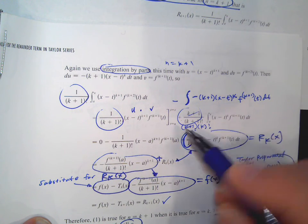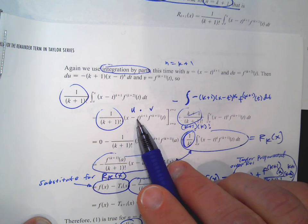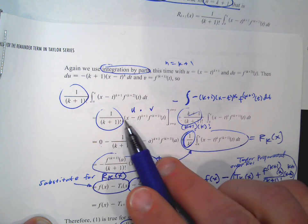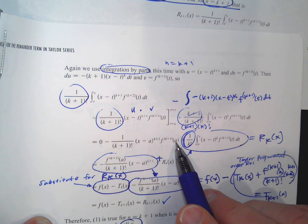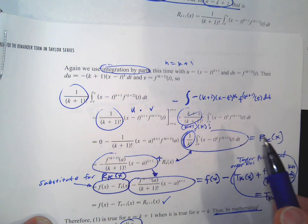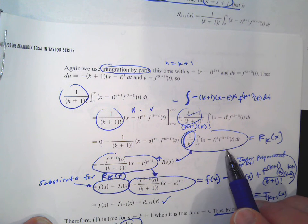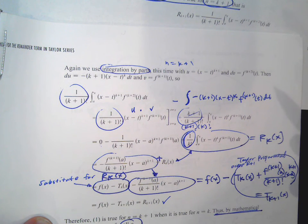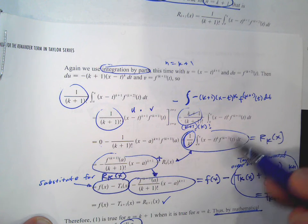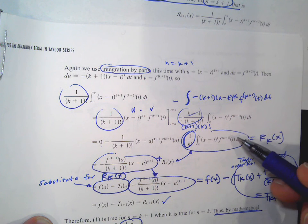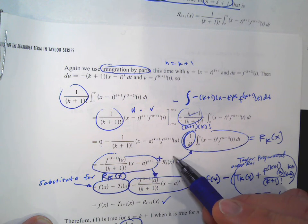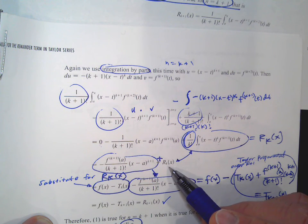This right here represents the remainder for the kth term — it's the formula for the remainder of the kth term. It pops out of this work as we're integrating. Otherwise we'd have to keep using integration by parts. But we see that's the remainder for when n equals k. We go ahead and write R sub k there for the remainder.